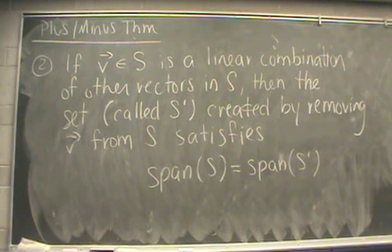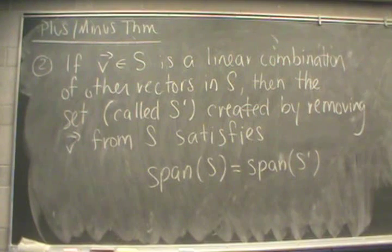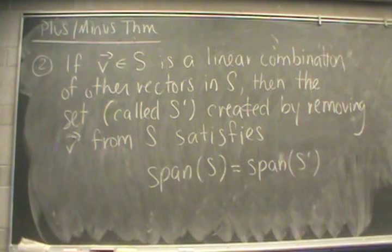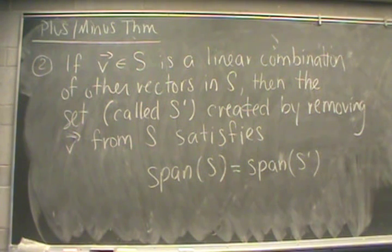The second part of the plus-minus theorem deals with spanning sets. If V happens to be in S and V is expressible as a linear combination of other vectors in S, then the set created by removing V from S — call it S' — satisfies the equation that the span of S equals the span of S'. So by removing V from S, we don't affect the span of that set of vectors.